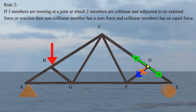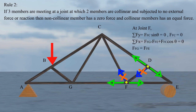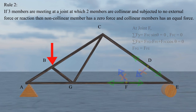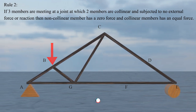Now consider joint F. At joint F, members FG and FE are collinear and member FC is non-collinear, hence the non-collinear member will have zero force. To derive this, consider joint F: taking summation of Fy equals zero gives FCF sin θ equals zero. Since θ cannot equal zero, FCF equals zero. Taking summation of Fx equals zero gives FG equals FE. Since these are collinear members they have equal member forces. After removing this zero force member, the structure gets simplified and you can easily apply the method of joint.